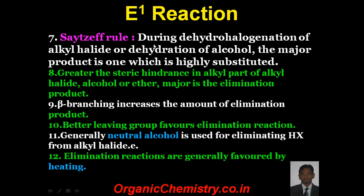The Zaitsev rule states that during dehydrohalogenation of alkyl halide or dehydration of alcohol — that is, loss of HX or loss of water from alcohol — the major product is the one which is highly substituted. The major product also depends on the stability of the alkene, and this rule is derived from the stability of the alkene itself. Greater steric hindrance in the alkyl part of alkyl halide, alcohol, or ether, the greater the elimination product. Beta branching increases the amount of elimination product.